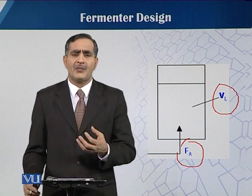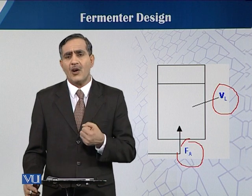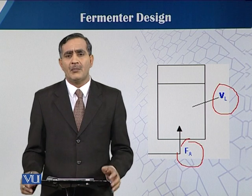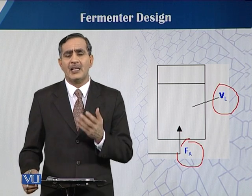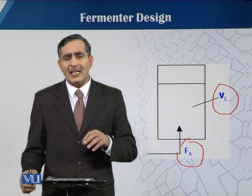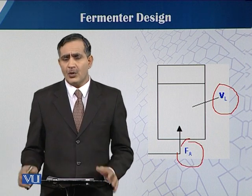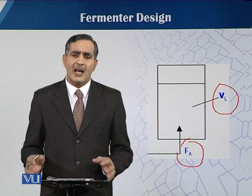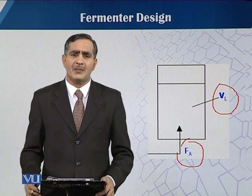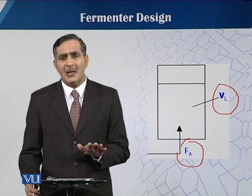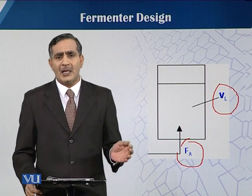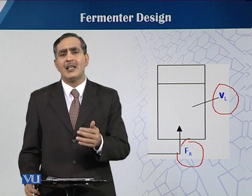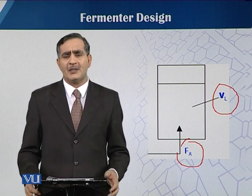If we want to control the dissolved oxygen in some cases, that can be controlled by two methods: either by increasing the flow rate or by increasing the agitation. Different modern fermenters are coupled with cascade systems, and we can maintain the dissolved oxygen by increasing or decreasing the flow rate, or by increasing or decreasing the impeller speed.